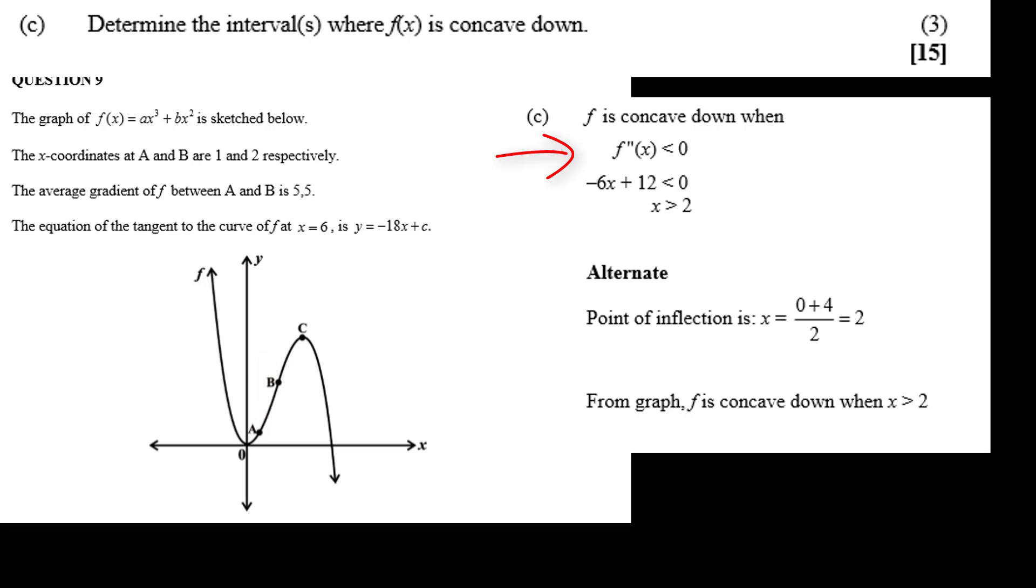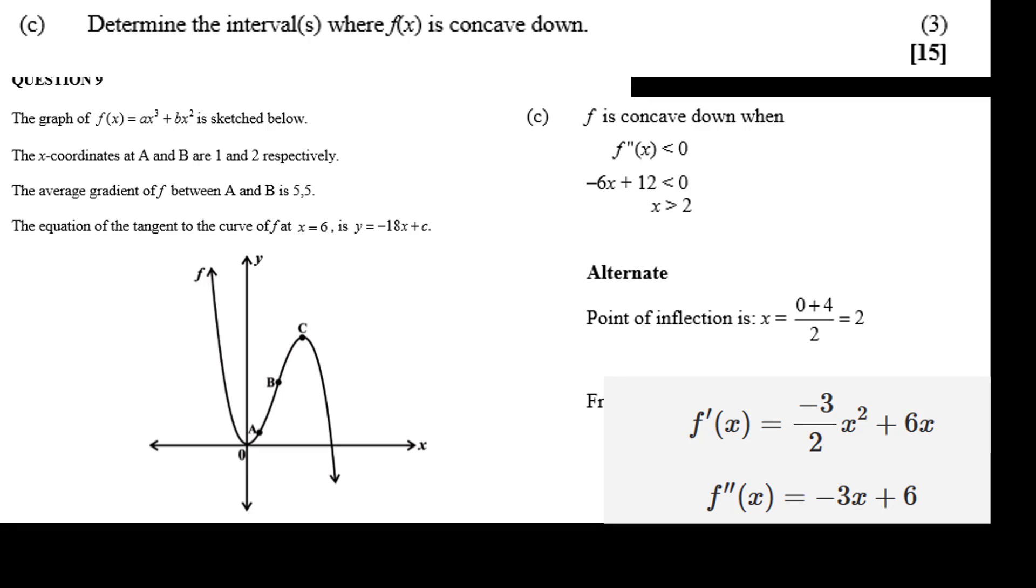So the function is concave down when the second derivative is less than 0. The IEB seem to have made another small error in the memo, but they get the correct answer. The correct answer for the second derivative of f is minus 3x plus 6, and not minus 6x plus 12.